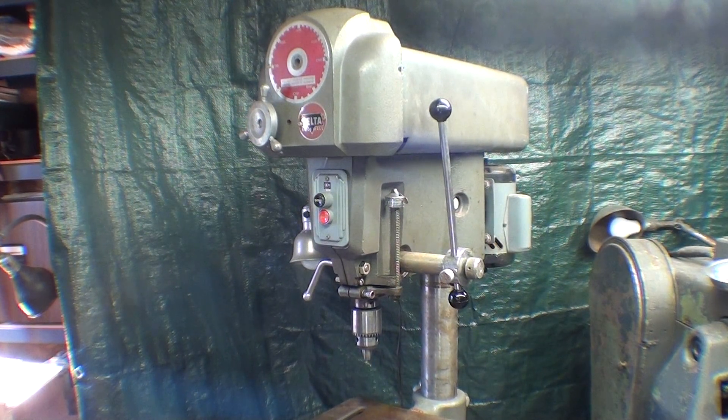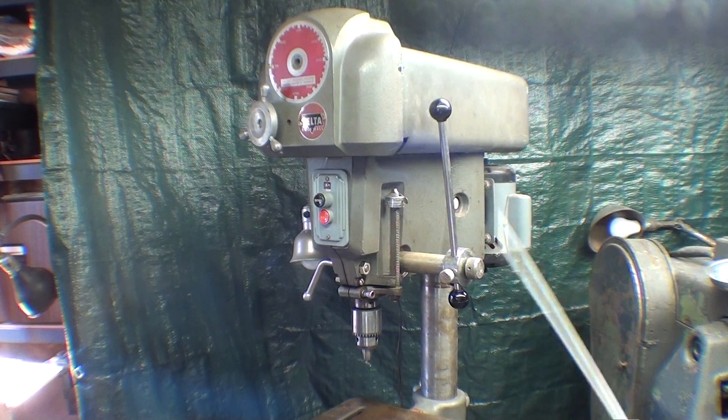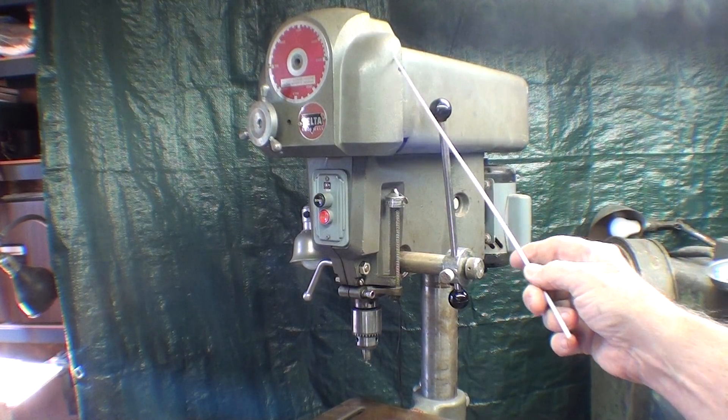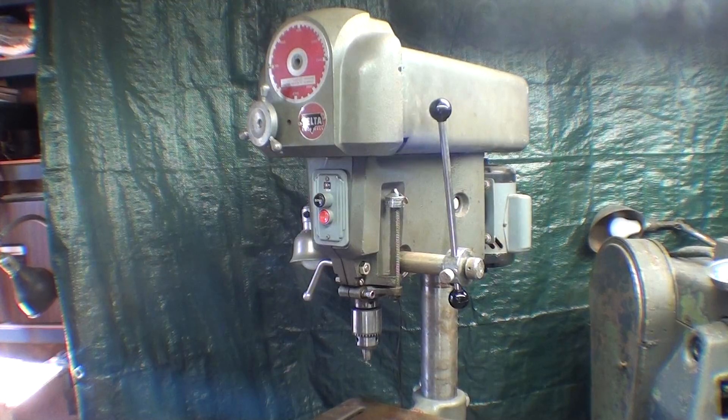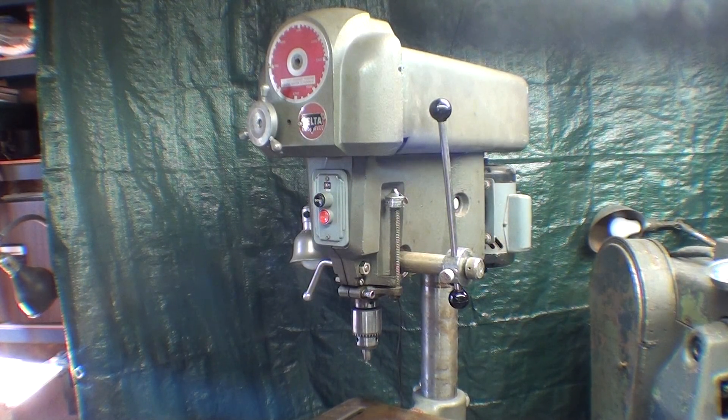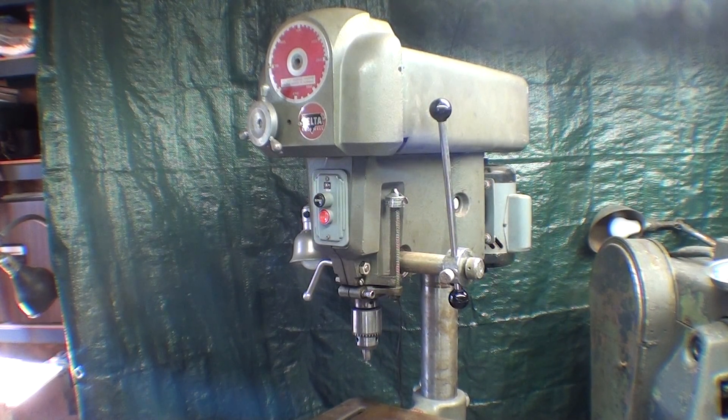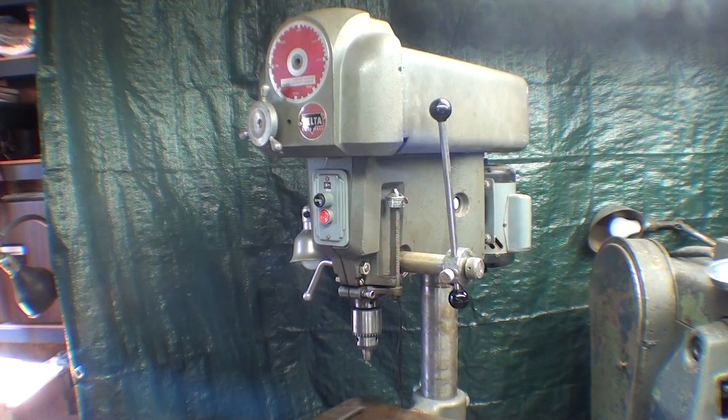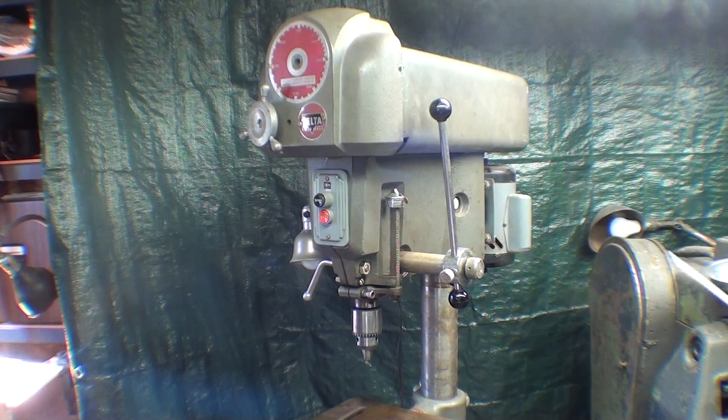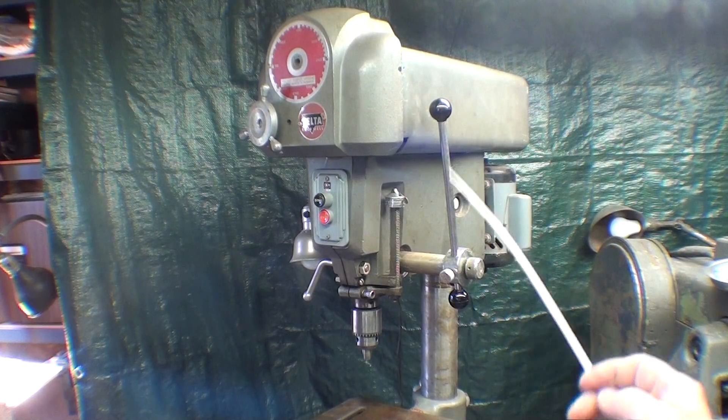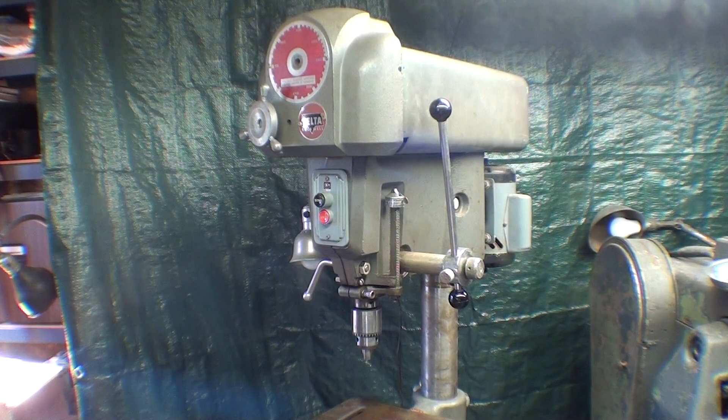Howdy, it's Tubal Cain again. In a recent video I showed you the auction where I bought this 15-inch Delta drill press, and I paid $190 for it. It's a model 1500 made in the early 60s, probably after 1962 or so.